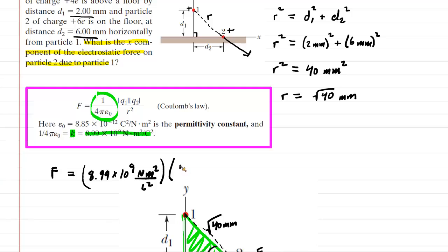Now, when you see 4e, what you need to do is take the 4 and then multiply that by the value of e. e has a value of 1.6 times 10 to the negative 19th Coulombs. And then similarly, q2 was positive 6e. So you're going to have to do 6 times 1.6 times 10 to the negative 19th Coulombs. And then you're going to divide that all by r squared.